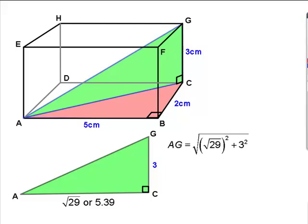Or, we can use the value root 29. Now, when you square root 29, you just get 29. So AG becomes the square root of 29 plus 9, which is the square root of 38, which the calculator will tell you is 6.16.